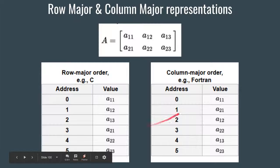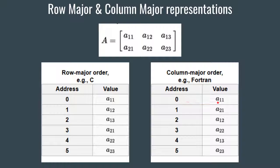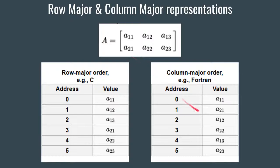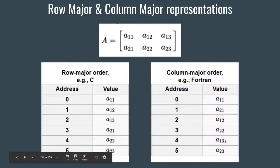In column major order, elements are stored column-wise. So for the first column we store a[1][1] then a[2][1]; for the second column a[1][2] then a[2][2]; for the third column a[1][3] then a[2][3]. So that was row major order vs column major order. You can always expect questions from address calculation in your exams, so make sure you practice and remember the formulas.